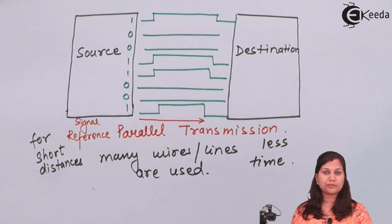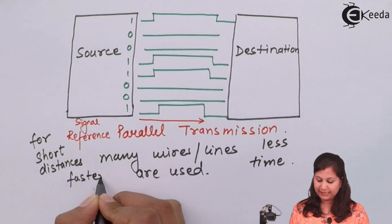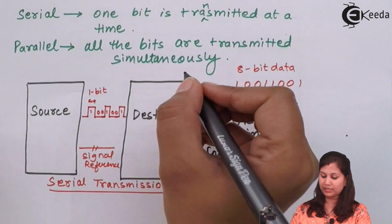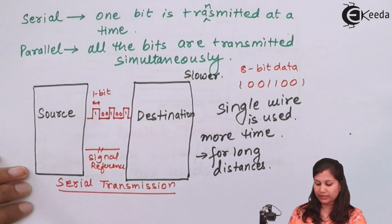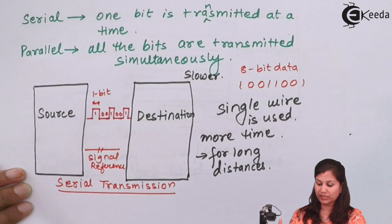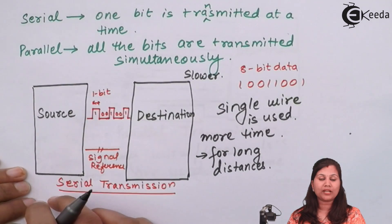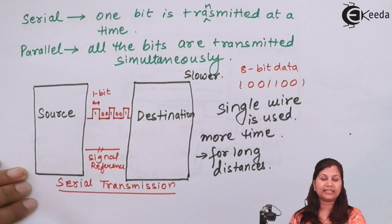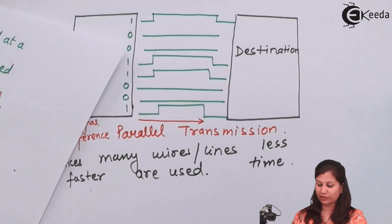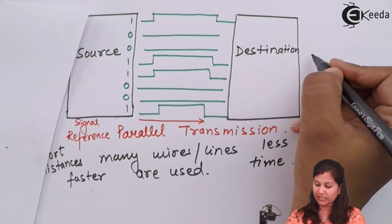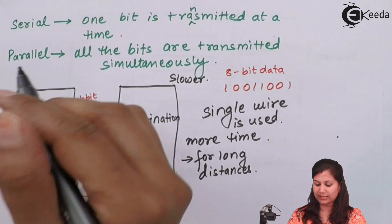Parallel transmission takes less time so it is faster, whereas serial transmission is slower. Serial transmission uses a single wire so less hardware and cabling is required, meaning it is cheaper. Parallel transmission is more expensive because so many wires are needed. So serial transmission is cheap whereas parallel transmission is expensive.